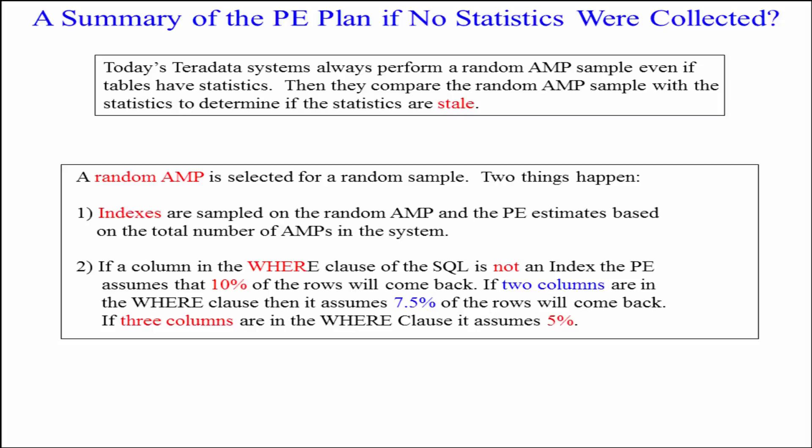A random amp is selected for a random sample. When this happens, two things occur. First, indexes are sampled on the random amp and the PE estimates based on the total number of amps in the system. Second, if a column in the WHERE clause of the SQL is not an index, the PE uses heuristics and assumes 10% of the rows will come back for a single column, 7.5% for two columns, 5% for three columns, and so on.